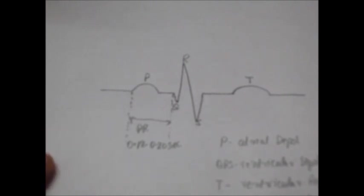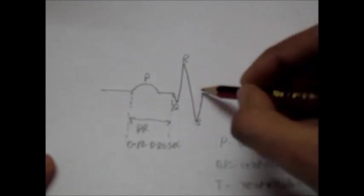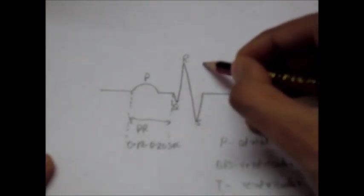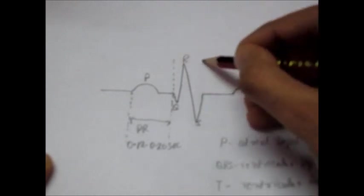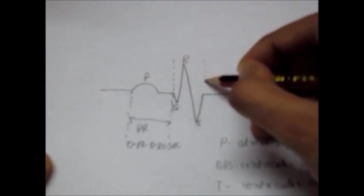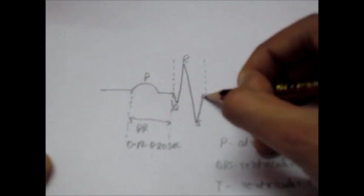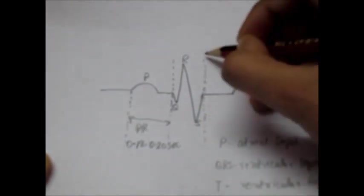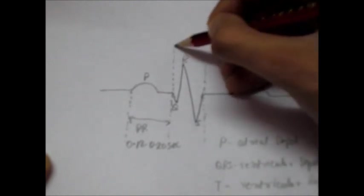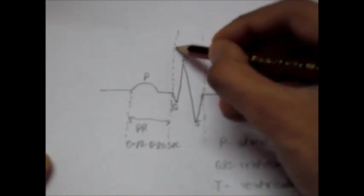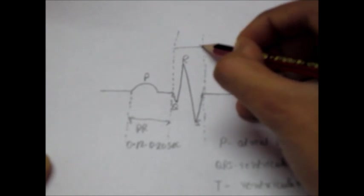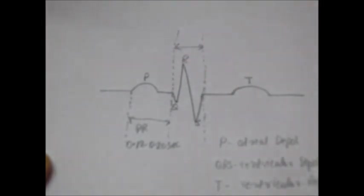Now let's see. Then there is a QRS complex from the beginning of Q wave till the end of S wave, from the beginning of Q wave till the end of S wave.